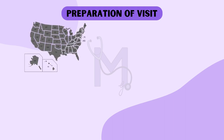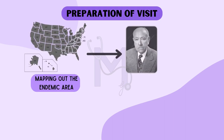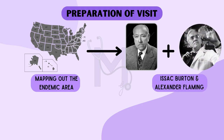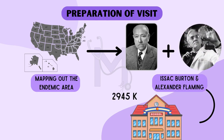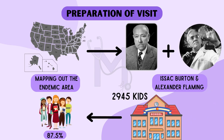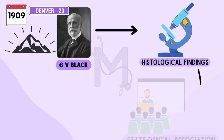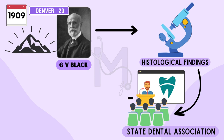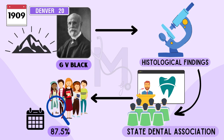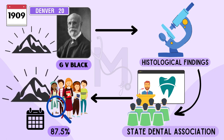In preparation for Black's visit, and as a first step in mapping out the entire endemic area, McKay, along with Isaac Burton and A. Fleming, visited a public school with 945 kids in Colorado Springs and noted that 87.5% of the students native to this area had Colorado stains. This new information was given to Black when he arrived in Denver in 1909. He then described the histological findings of the lesion at the State Dental Association meeting, along with his observations noted during the several weeks he had been touring the Rocky Mountain areas.